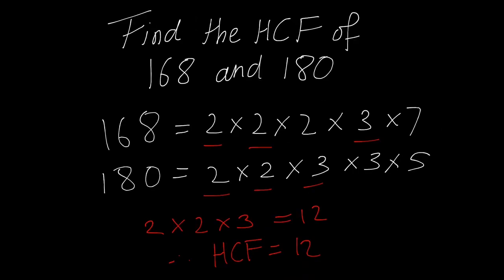How do we find the highest common factor of 168 and 180? We need to use the product of prime numbers method, using the tree diagram approach as in the last example. So: 168 equals 2 times 2 times 2 times 3 times 7. And 180 equals 2 times 2 times 3 times 3 times 5.